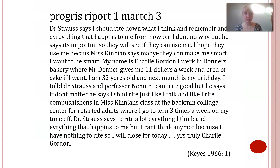Here is our first extract from the very opening of the book. Progress Report 1, March 3rd. Dr Strauss says I should write down what I think and remember, and everything that happens to me from now on. I don't know why, but he says it's important, so that they will see if they can use me. I hope they use me, because Miss Kenyon says that maybe they can make me smart. I want to be smart. My name is Charlie Gordon. I work in Donner's Bakery, where Mr Donner gives me $11 a week and bread or cake if I want. I am 32 years old and next month is my birthday. I told Dr Strauss and Professor Nima I can't write good, but he says it don't matter. He says I should write just like I talk, and like I write compositions in Miss Kenyon's class at Beekman College Centre for Retarded Adults, where I go to learn three times a week on my time off. Dr Strauss says to write a lot, everything I think and everything that happens to me, but I can't think anymore because I have nothing to write, so I will close for the day. Yours truly, Charlie Gordon.